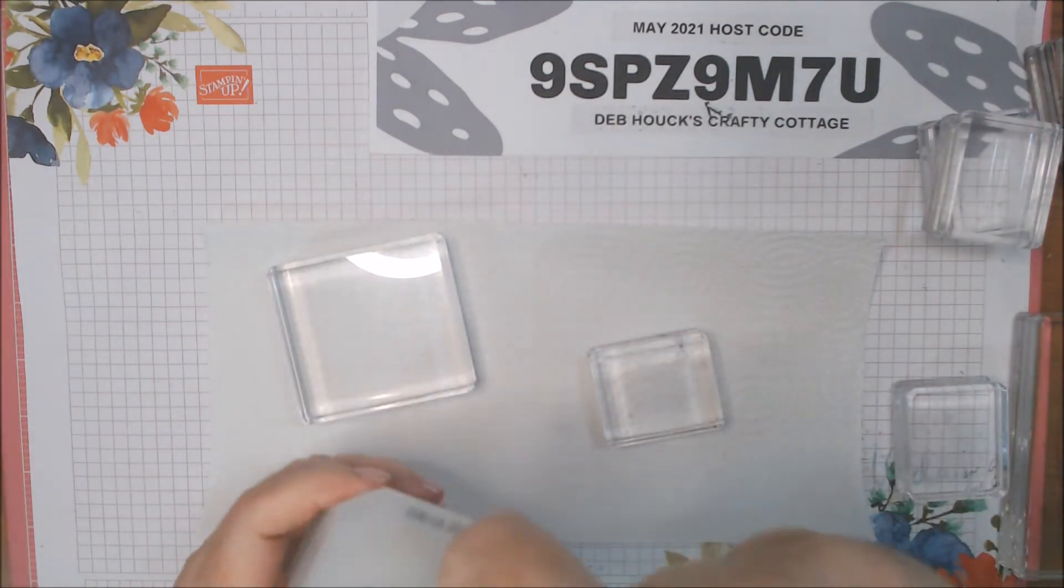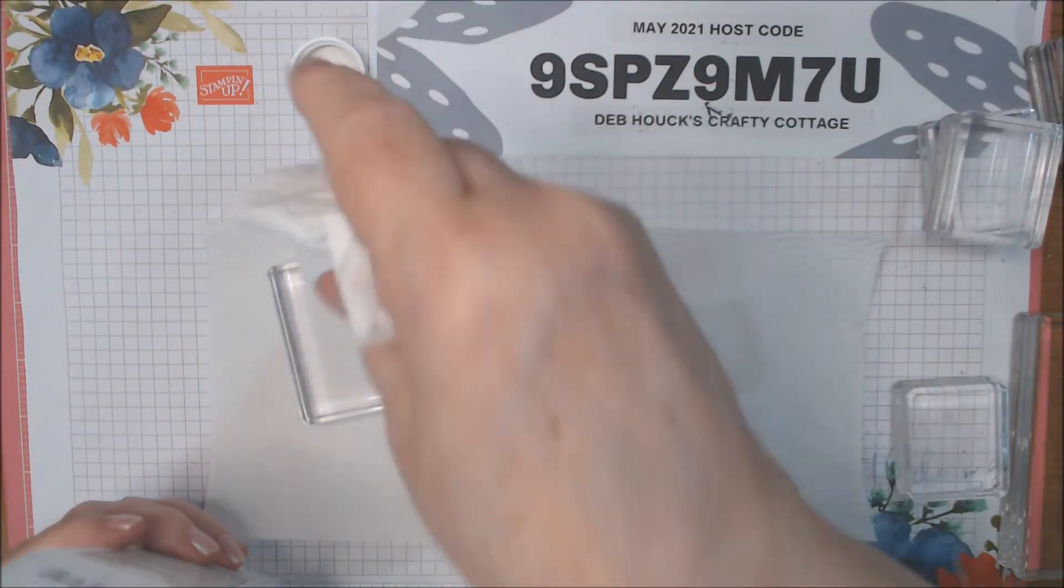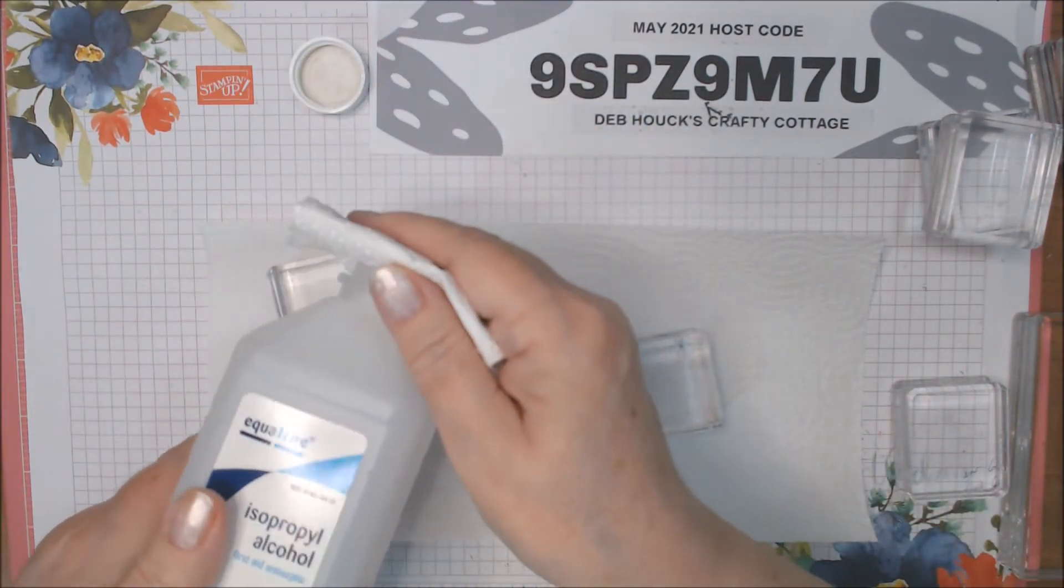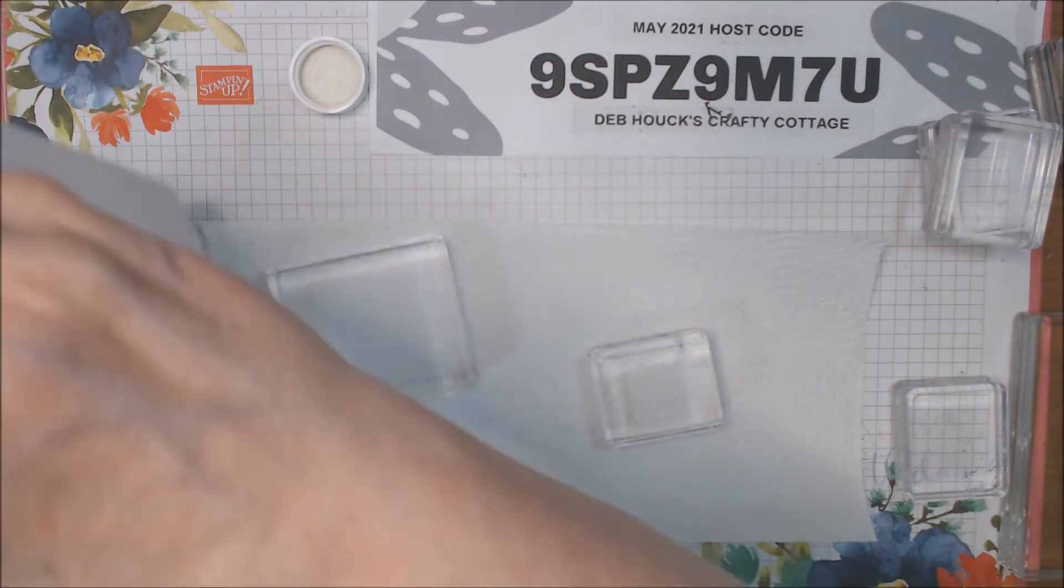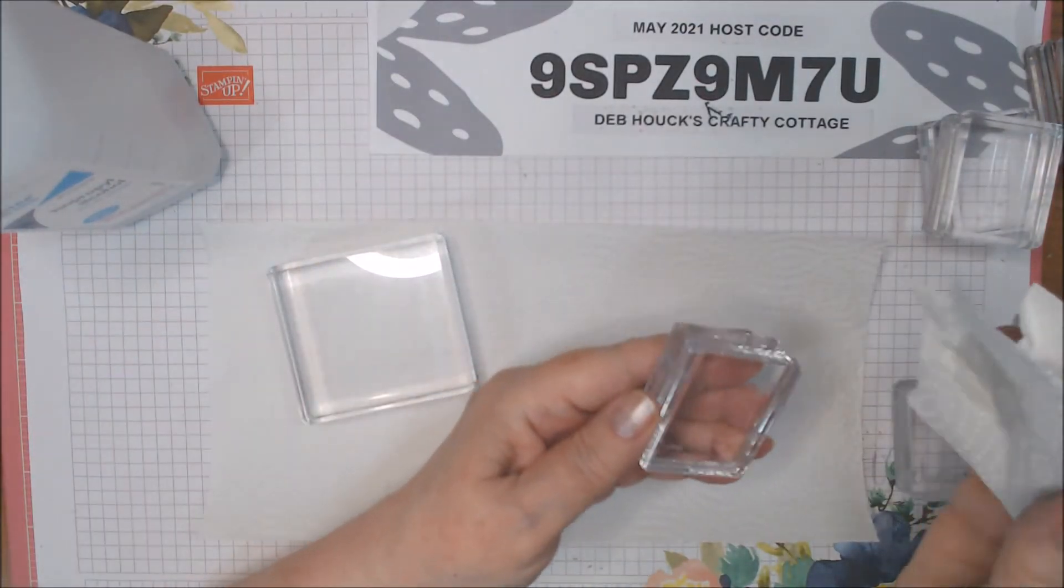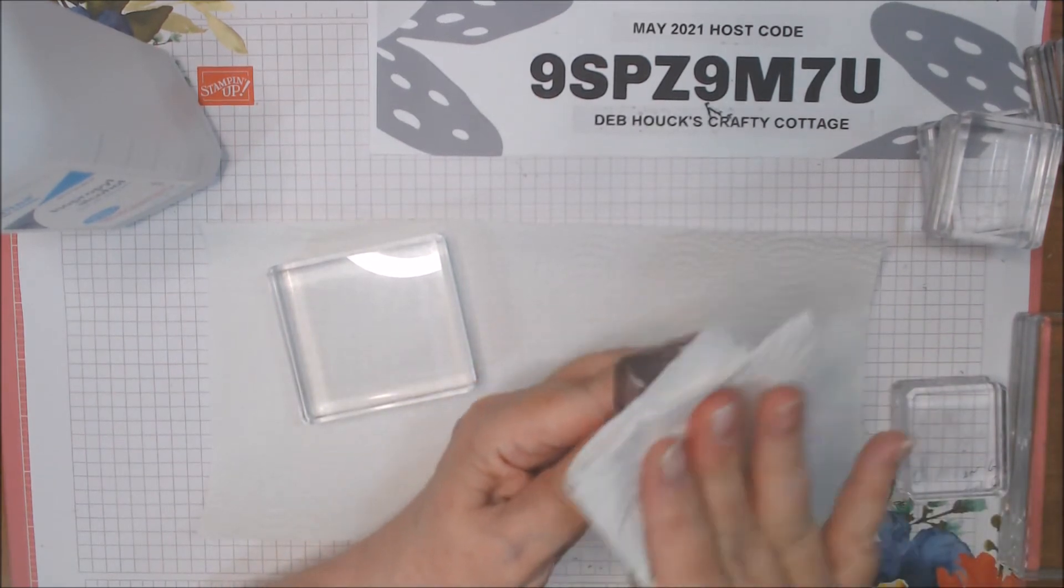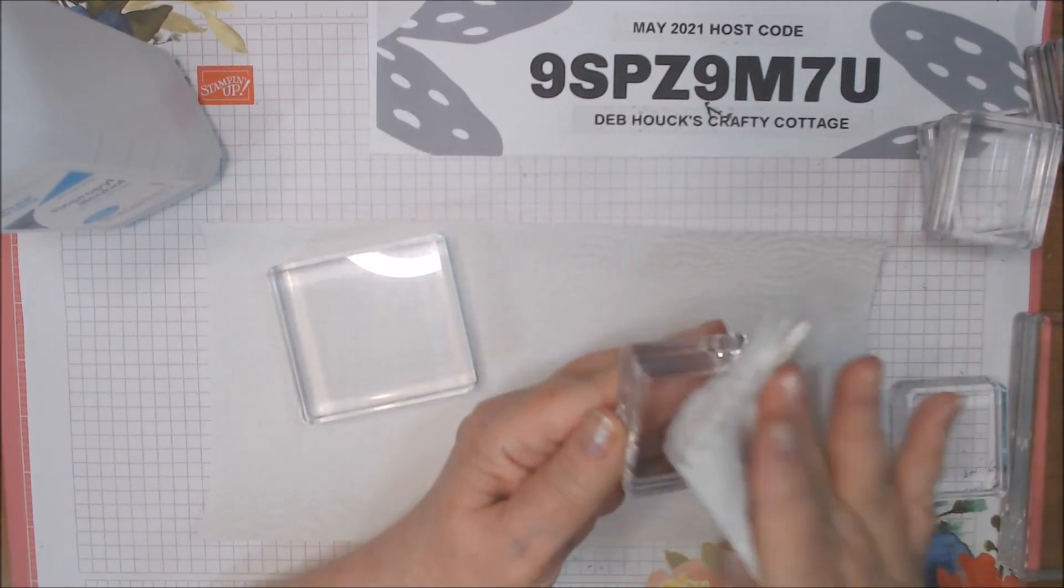It's just your isopropyl alcohol. You can get it in your pharmacy or Walmart or wherever. Now this will evaporate quickly, but it cleans your blocks really well.